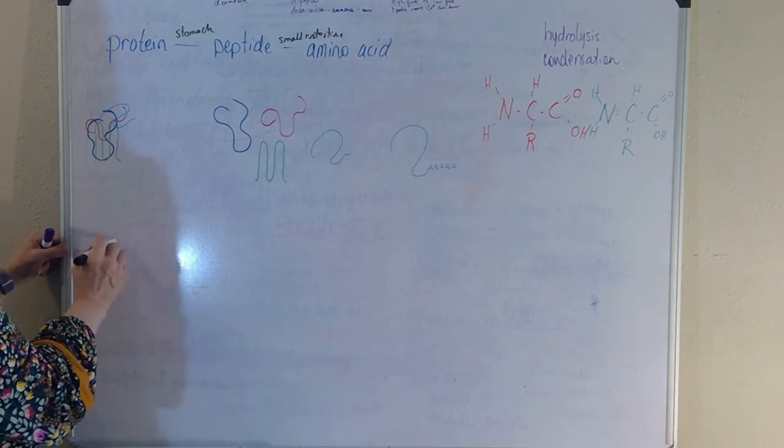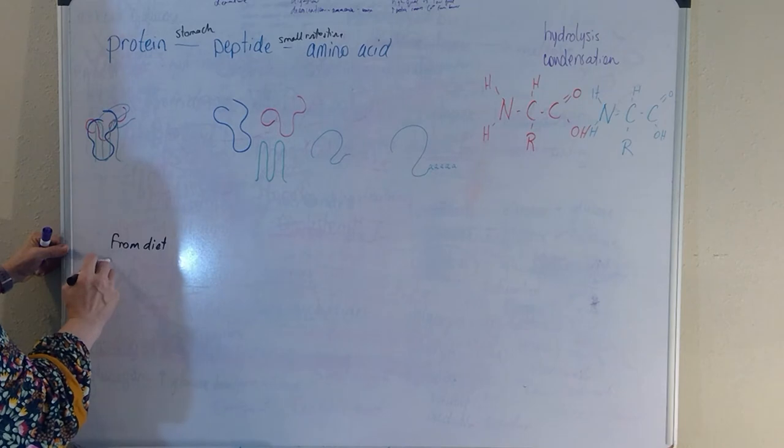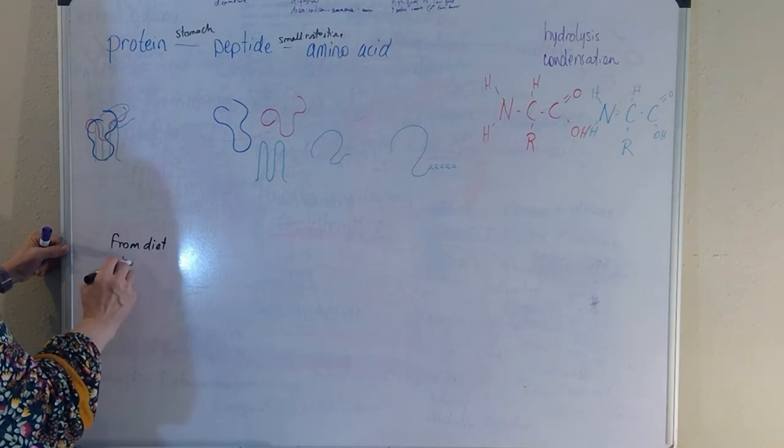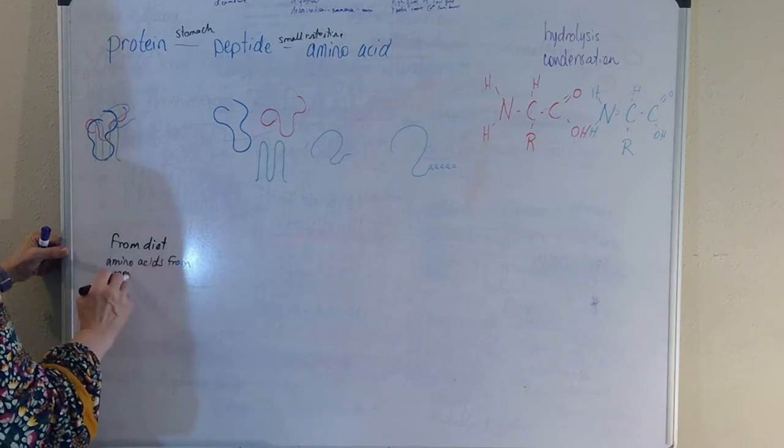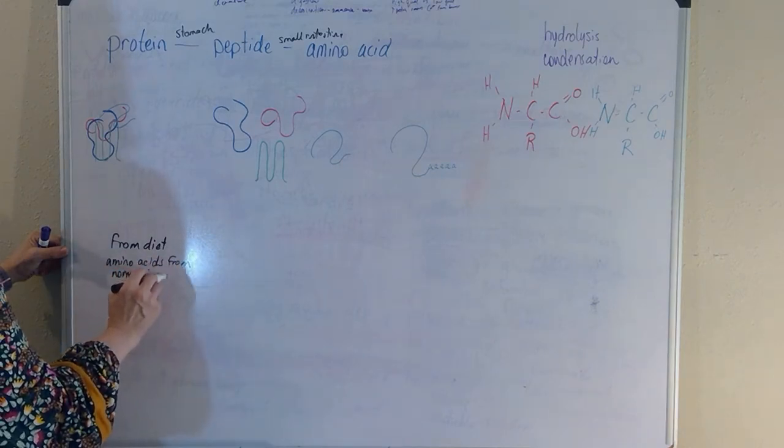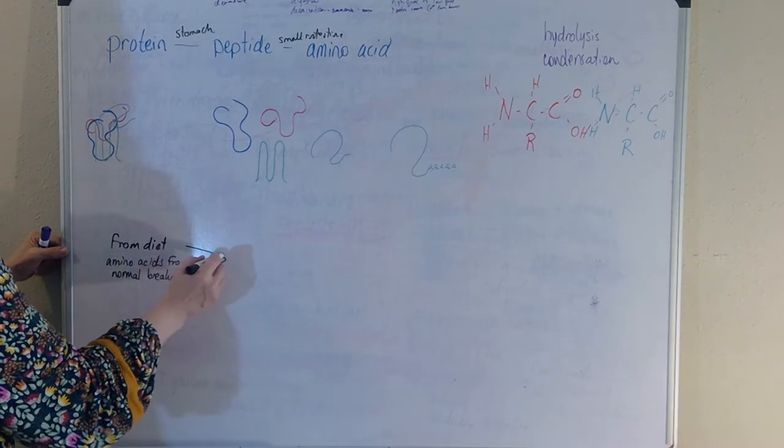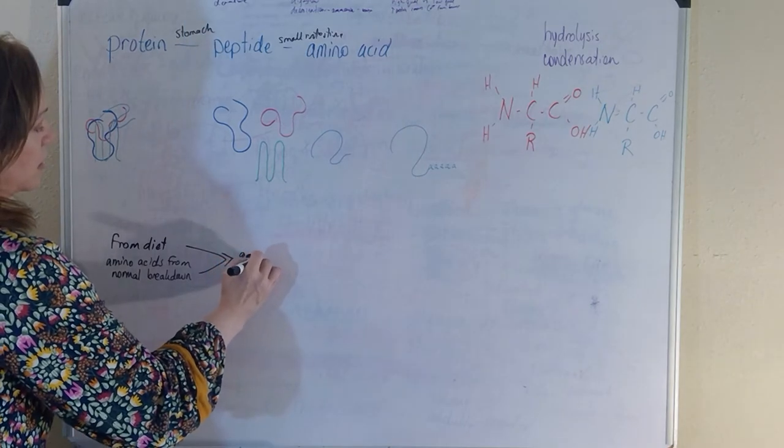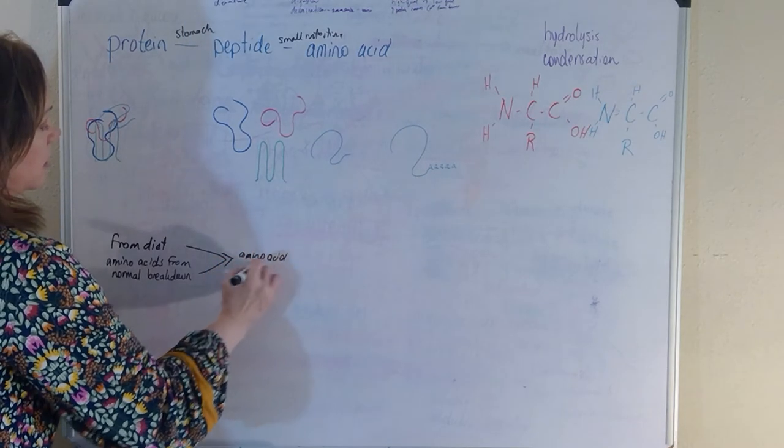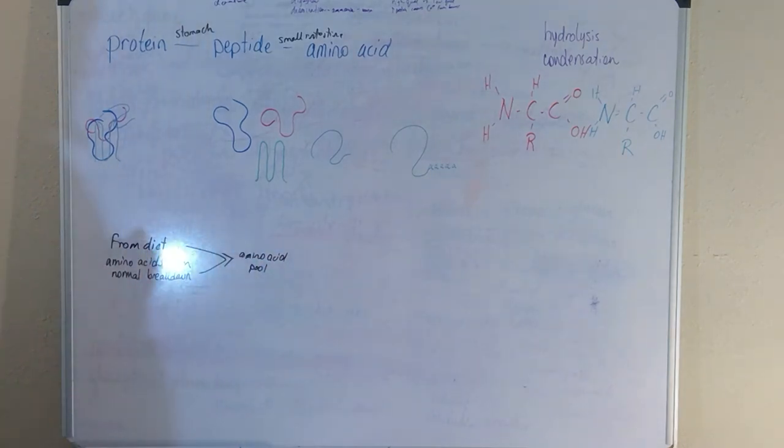So the amino acids from the diet and the amino acids from the normal breakdown of proteins will actually both enter and they're going to make the amino acid pool. The amino acid pool is where your cells are going to be able to get the amino acids to actually make a new protein from.